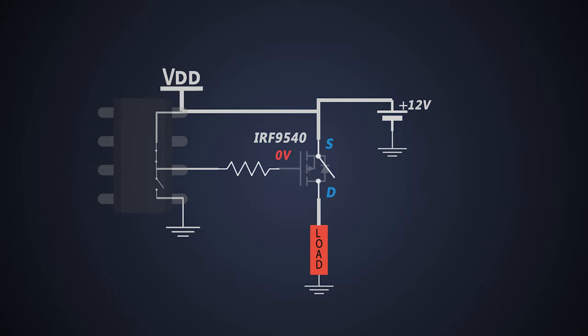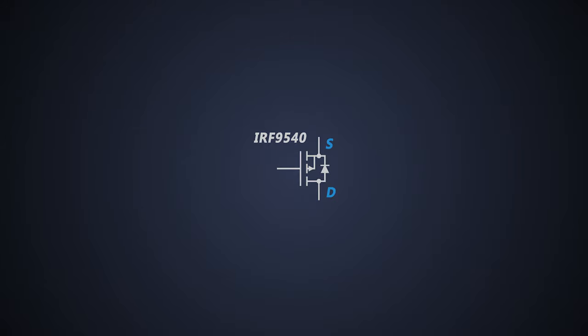See that's how a P channel MOSFET is beneficial for high side switching. We didn't require any additional circuit to turn on the MOSFET or turn it off. But we can't use P channel MOSFET in the circuit everywhere. There are two very important reasons.